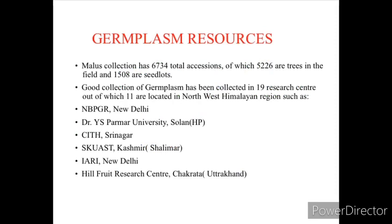Malus collection has 6,734 total accessions, of which 5,226 are trees in the field and 1,508 are seed lots. A good collection of germplasm has been made in 19 research centers, out of which 11 are located in the Northwest Himalayan region, like NBPGR New Delhi, Dr. YS Parmar University Solan Himachal Pradesh, CITH Srinagar, SKUAST Kashmir, IARI New Delhi, and Hill Fruit Research Center Chakrata, Uttarakhand.